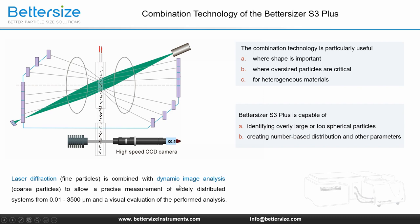However, this combination of two methods is challenging because it requires a powerful optical bench, an ultra-fast and high-resolution camera system, as well as compelling software to process all the information directly online. The Betasizer S3 Plus uses one of the CCD cameras to photograph and statistically evaluate the coarse particles. The results from laser diffraction and dynamic image analysis are combined in an intelligent routine by weighting based on the concentration determination of both methods. The combined measurement results can then be separated from each other, and the influence of the combination technology compared to pure laser diffraction or pure image analysis can be worked out.